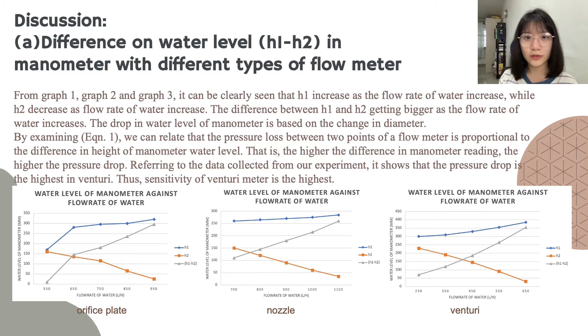I'm Eugene and I'm going to continue with the discussion on difference on water level in manometer with different types of flow meter. Based on the three graphs below, it can be clearly seen that H1 increased as the flow rate of water increased while H2 decreased as flow rate of water increased. The difference between H1 and H2 getting bigger as the flow rate of water increased. The drop in water level of manometer is based on the change in diameter.